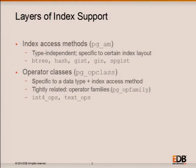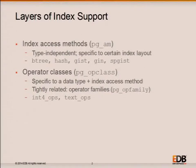It is theoretically possible to add your own index access method as a user, but in practice they've mostly been added to the core code as part of major releases. Some of you may have seen a talk in the last slot about a proposal to add a new index access method, so expect that list to grow. But in the context of one major release, that's the list as it stands today. Now, in order to index values of a particular data type, the system requires certain knowledge particular to that data type.